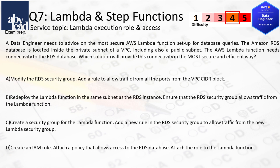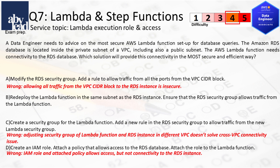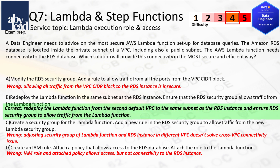Question 7: How do you most securely connect Lambda functions to an RDS database in a private subnet? Insecure is to allow all traffic from the VPC CIDR block to RDS, and a security group doesn't solve cross-VPC connectivity. Also, an IAM role with an attached policy can't be used to connect to RDS. Most advisable is to redeploy the Lambda function in the same RDS subnet, with its security group configured to allow Lambda.